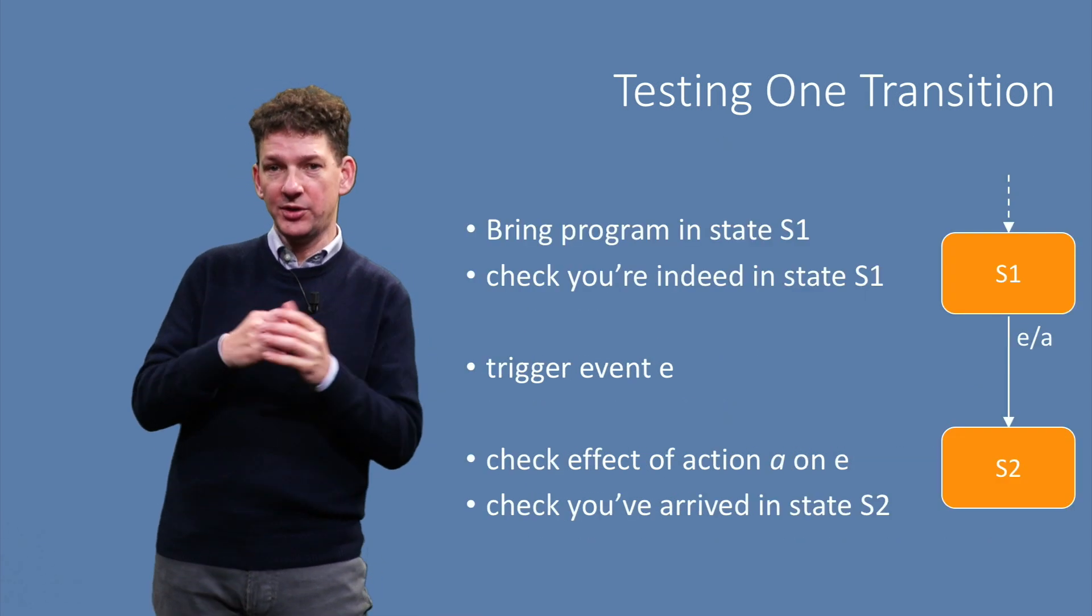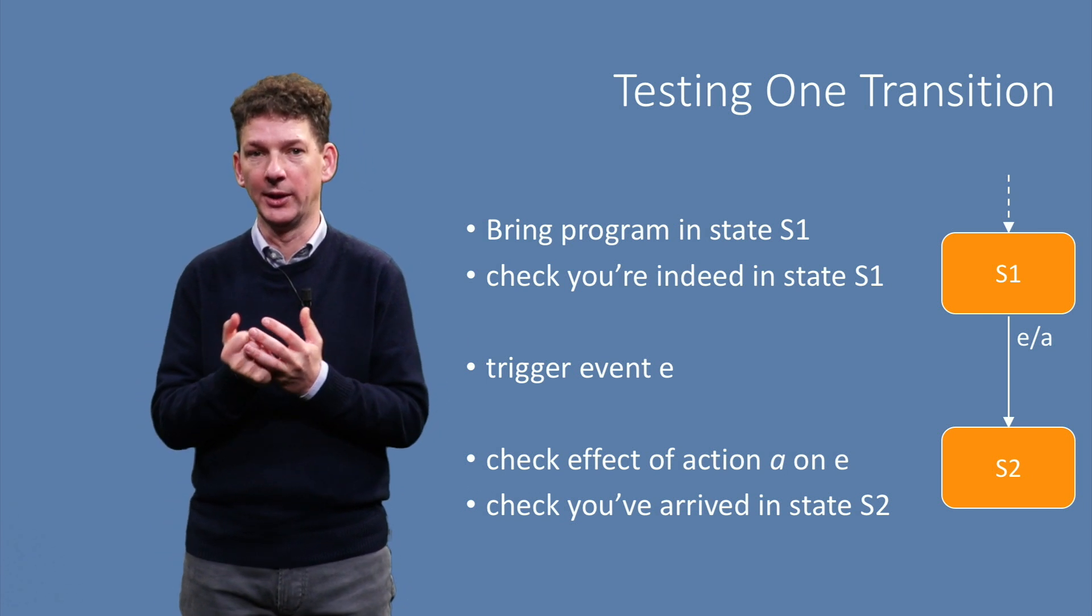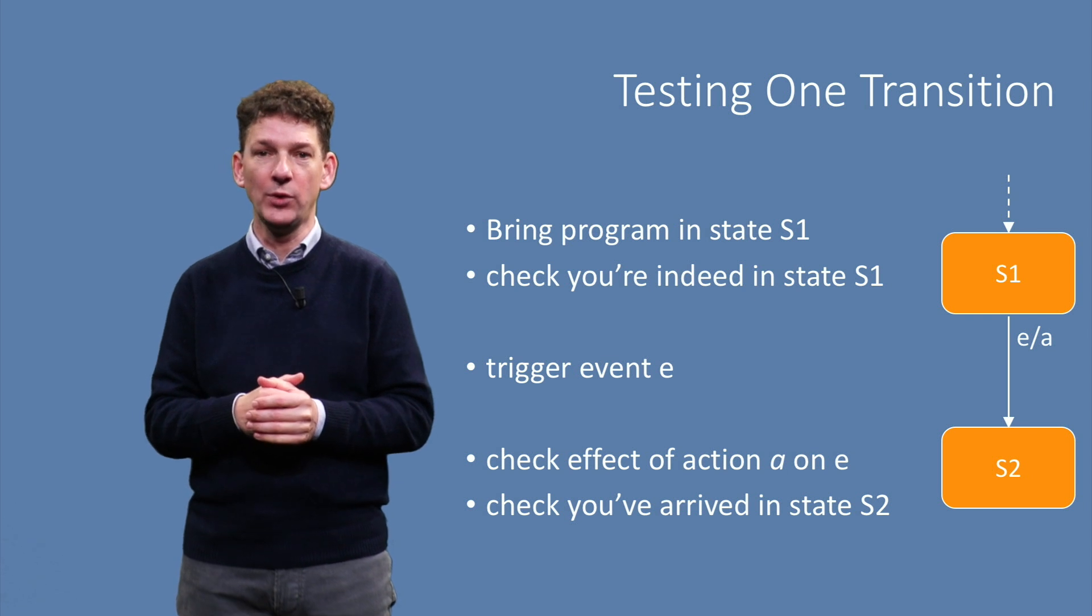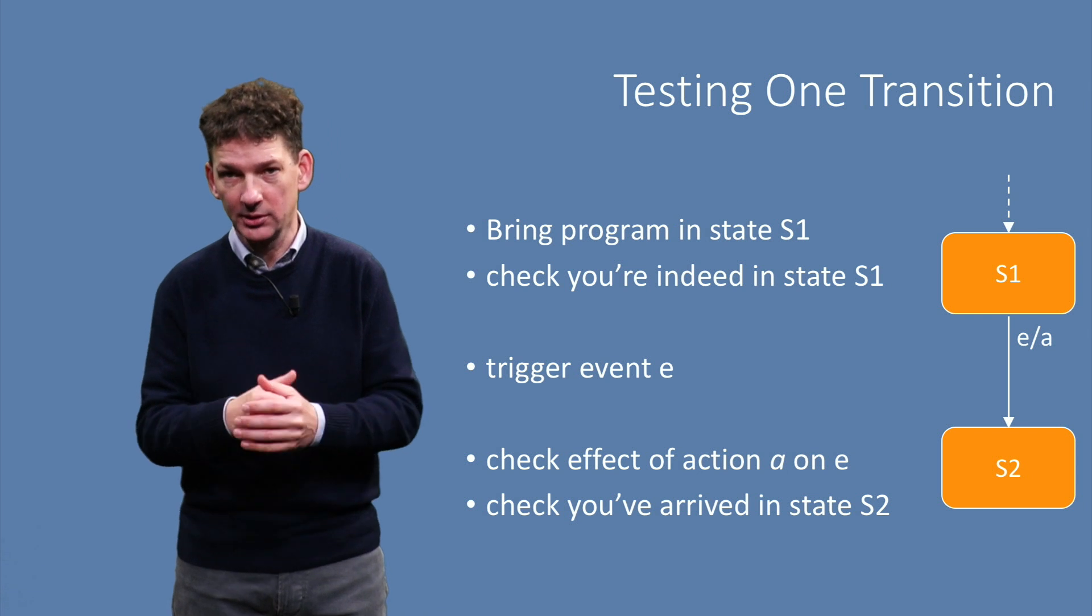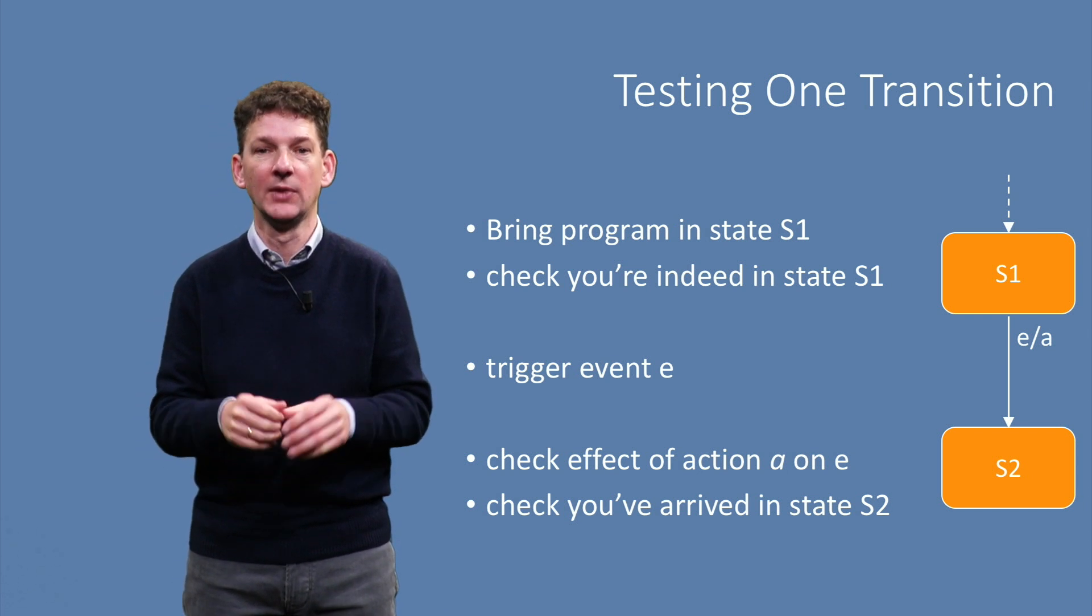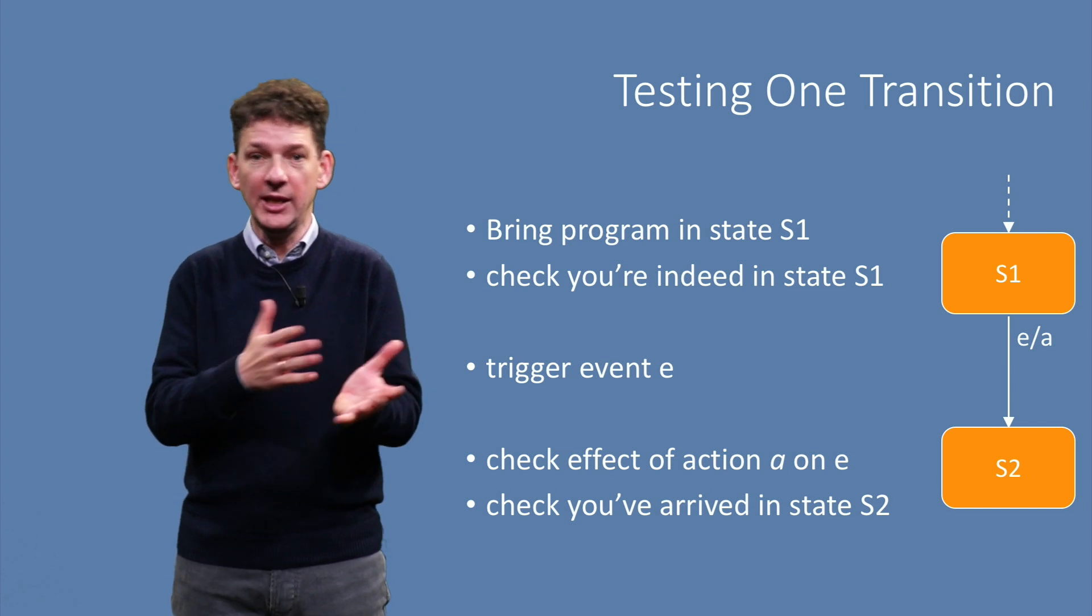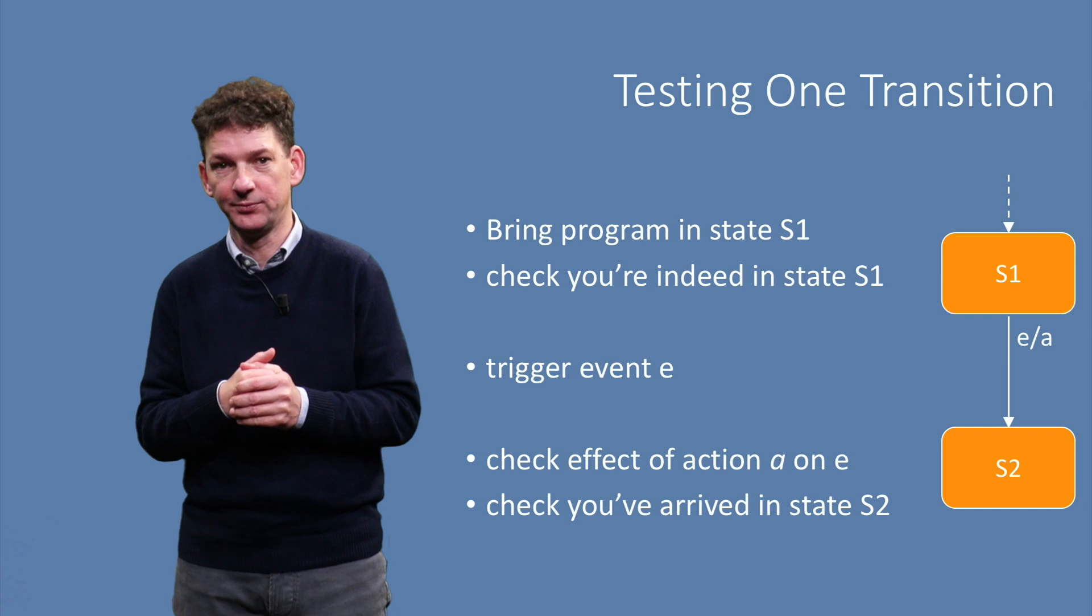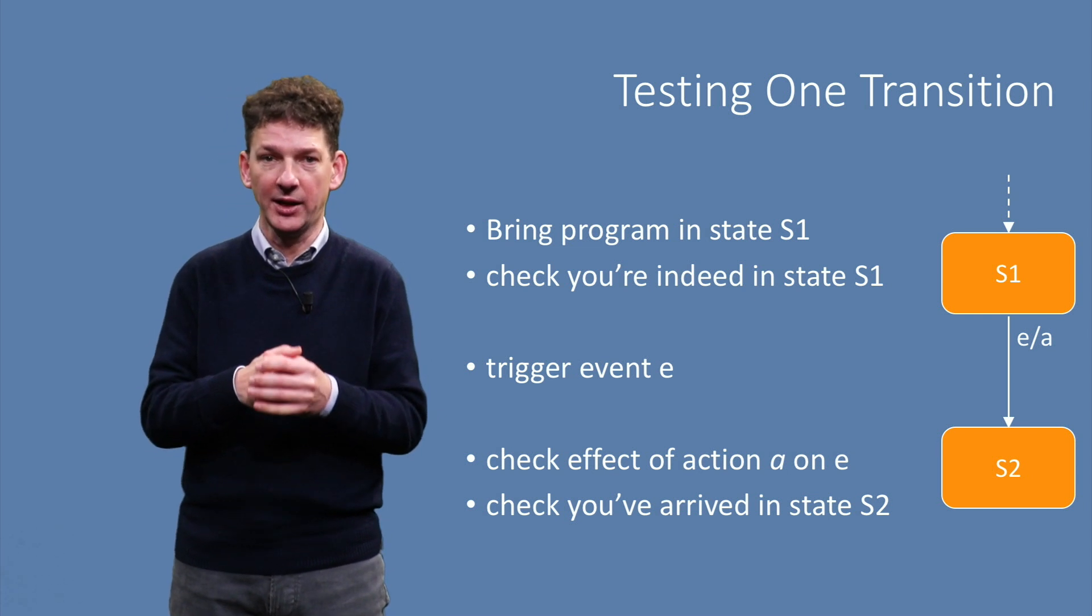To test one transition between two states S1 and S2, we do the following. First, we somehow bring the system into the state S1, and ensure, verify, that we are indeed in state S1. Then we trigger the event, called E in this case, that should lead us to state S2. We then check that any action that should come with the event actually takes place.